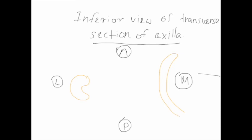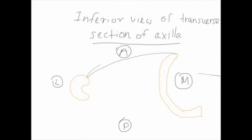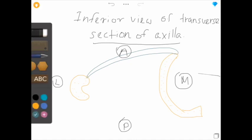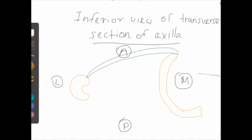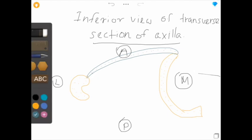Medially you can see the fourth rib. The pectoralis major muscle is in the anterior aspect. It originates from the medial border and superior surface of the medial half of the clavicle, the sternum, and the upper sixth costal cartilages, and is inserted into the lateral lip of the bicipital groove of the humerus.